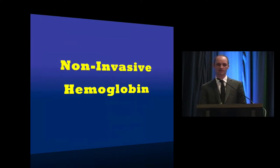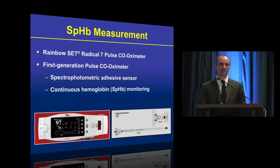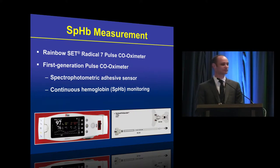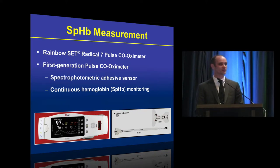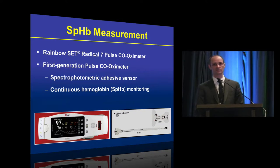The device that's attracted the most interest in the medical literature is this device manufactured by Massimo — the Rainbow Radical Seven pulse oximeter. What you're seeing here on this slide are pictures from the first generation of the device. On the right-hand side image, you can see the spectrophotometric adhesive sensor, and below that is an interconnect that connects the sensor to the base unit. The base unit converts the signal into an electrical signal, which then provides a hemoglobin concentration on the LCD.